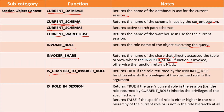is_granted_to_invoker_role returns true if the role returned by the invoker_role function inherits the privileges of the specified role in the argument — that means it inherits the main object privileges. is_role_in_session returns true if the user's current role in the session, that is the role returned by current_role, inherits the privileges of the specified role; otherwise it returns false if the specified role is either higher in the role hierarchy of the current role or is not in the role hierarchy at all.